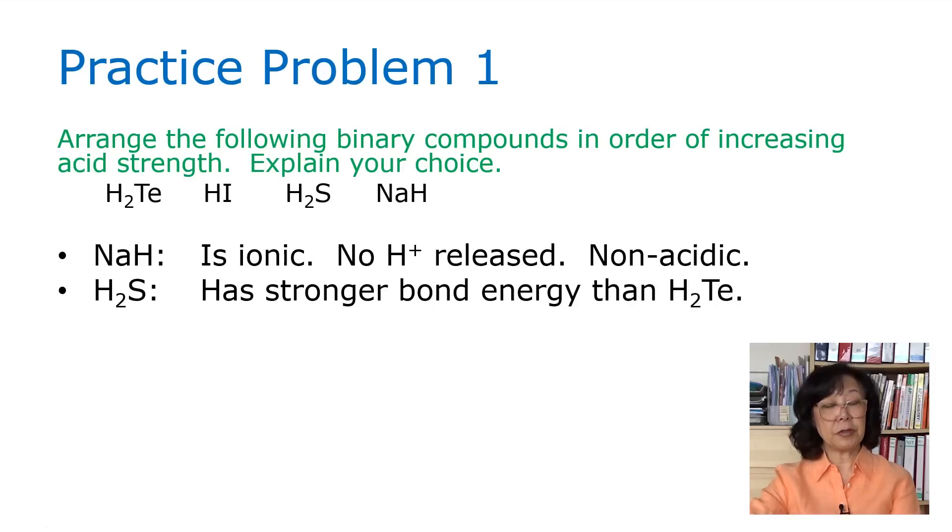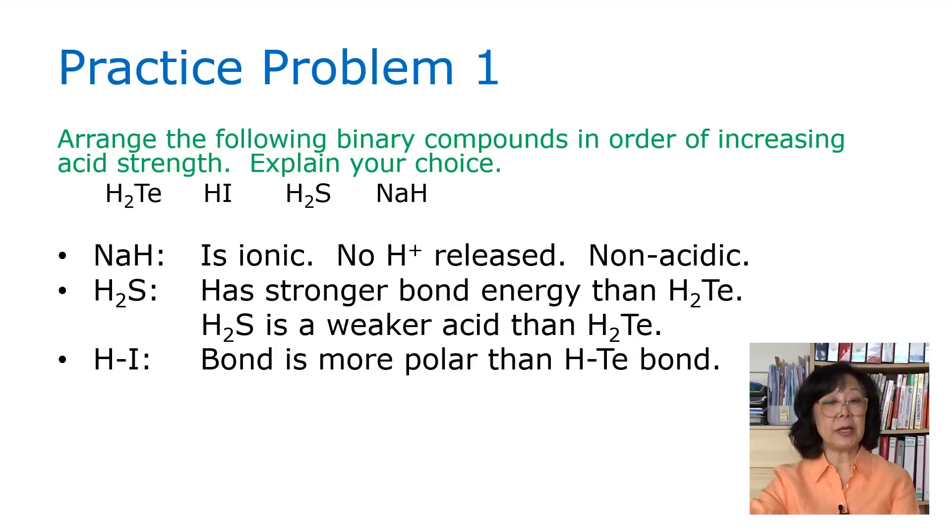When we look at hydrosulfuric acid H2S, it has stronger bond energy than H2Te. Therefore, H2S is a weaker acid than H2Te. Finally, when we look at HI, the bond is more polar than H-Te. So HI is a stronger acid than H2Te.